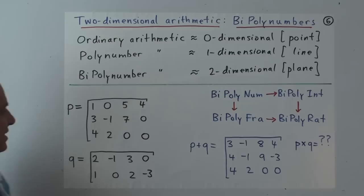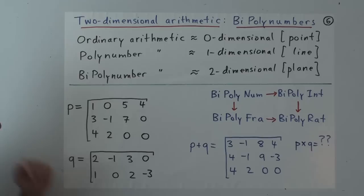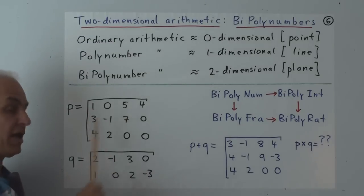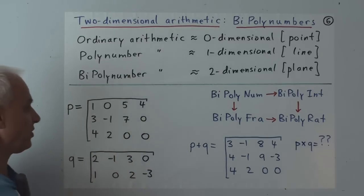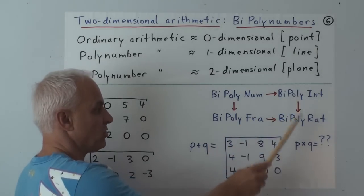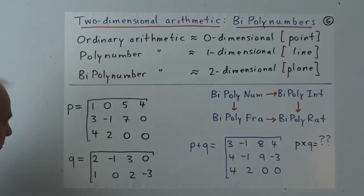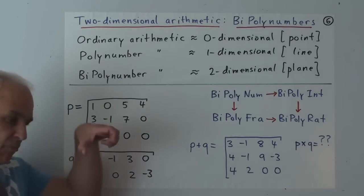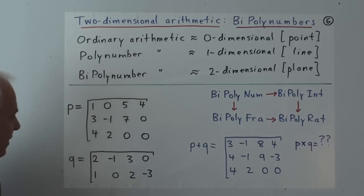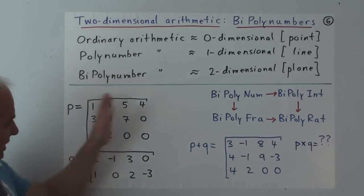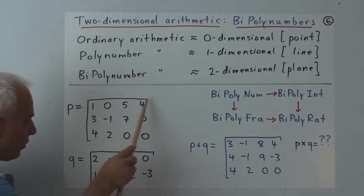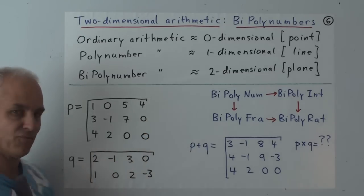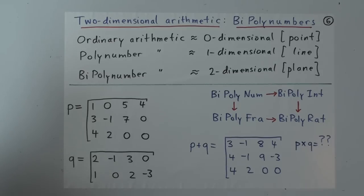Let's introduce bi-polynumbers with examples. Here is a bi-polynumber P — a rectangular array of integers: 1, 0, 5, 4 in the first row; 3, −1, 7, 0 in the second; 4, 2, 0, 0 in the third. These are actually bi-poly integers. There's a frame with little corner hooks showing the bounds of this polynumber. Here's another one, Q, slightly different in size: two rows of four entries each — [2, −1, 3, 0] and [1, 0, 2, −3].